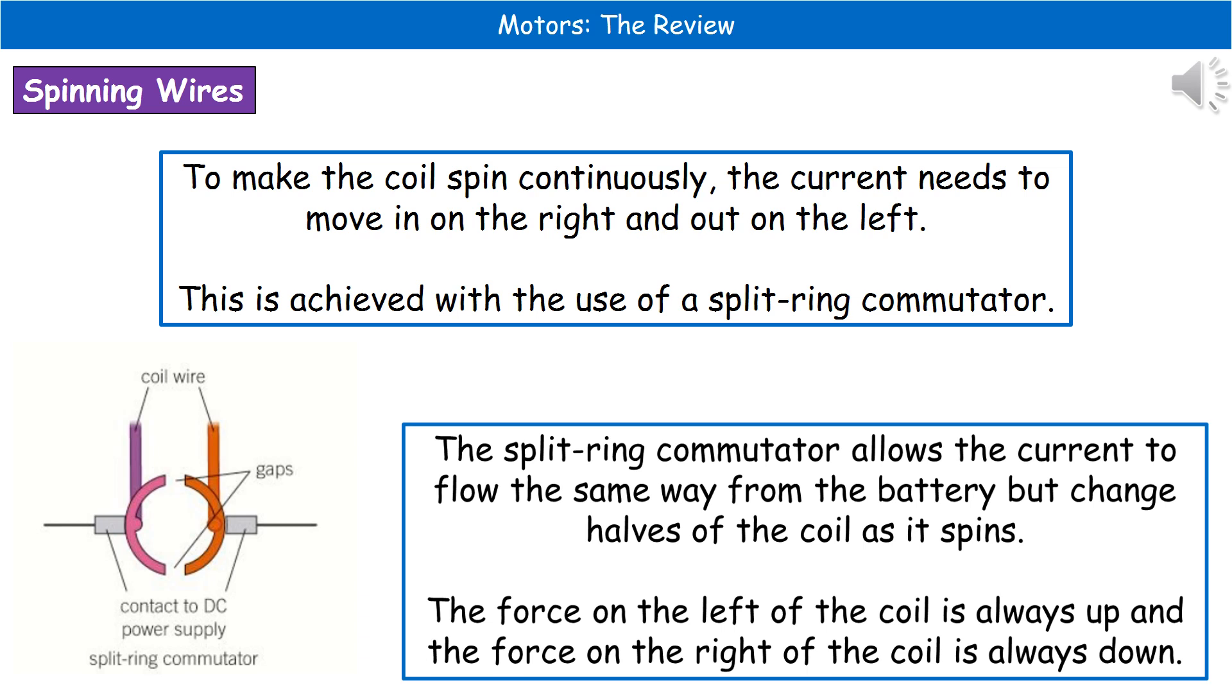The way that we actually achieve that in terms of the design of the motor is by using this thing called a split ring commutator. Go very careful because we're going to have a look at how that phrase changes ever so slightly in a different device later on. So in our motor, it's a split ring commutator and you can see a picture in the bottom left there. You can see why it's called a split ring commutator, because there's a gap in the middle of the two sides.